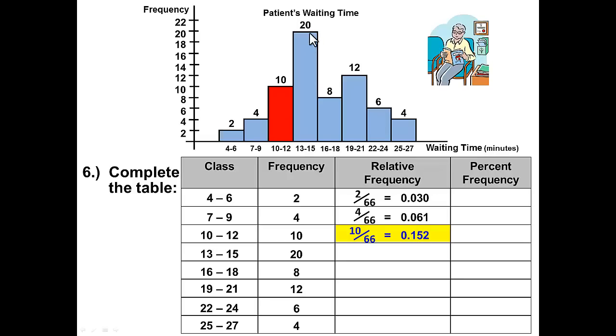Moving on to the next class, we'll get 20 divided by 66, which is .303. Moving to the next class, 8 divided by 66, which is .121. 12 divided by 66, which is .182. 6 divided by 66, which is .091. And for the last group, I get 4 divided by 66, which is .061.